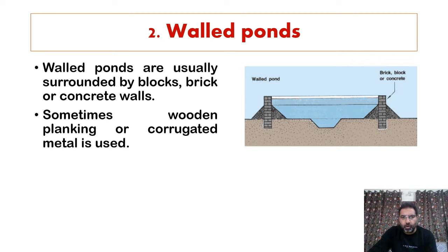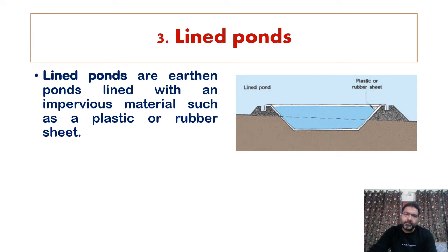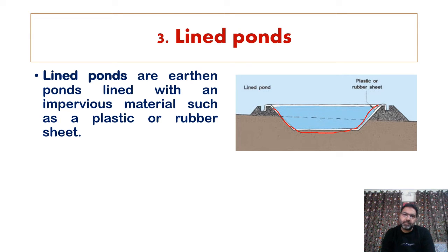The second category is walled ponds — these are usually surrounded by blocks constructed brick by brick, using concrete. Sometimes instead of concrete, wooden planking or corrugated metal is used. The third category is lined ponds, where earthen ponds are lined with an impervious material such as plastic or rubber sheet. This is done when the soil is porous or permeable, in order to prevent seepage of water.